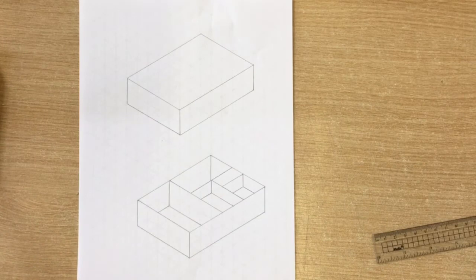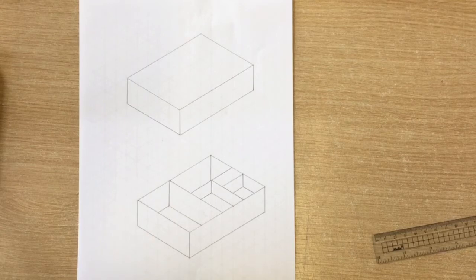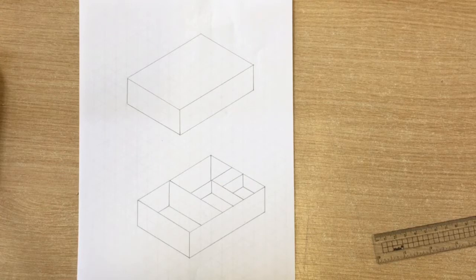So for each design you need to annotate to explain how the packaging will hold each item. So how is it going to hold the board, how is it going to hold the counters, the cards, the dice and the leaflet. You need to explain the shape of the box that you have gone for. So if you have gone for a cube, a rectangle, a triangle, you need to explain why you have chosen that shape.